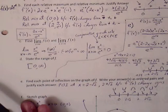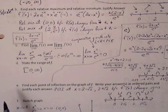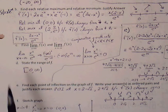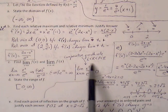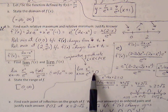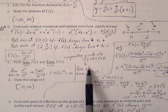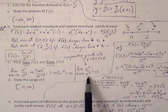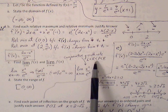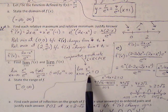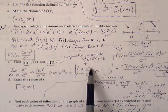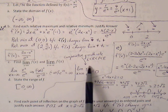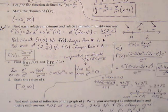Part c asks for the limit as x approaches infinity and the limit as x approaches negative infinity. As x approaches infinity, we use comparative growth rates: we have a polynomial on top and an exponential in the denominator. Both go to infinity, but e^x grows at a faster rate than x². So the denominator overtakes the numerator, making the fraction smaller and smaller until it reaches zero. The limit as x approaches infinity is zero.